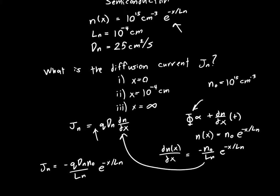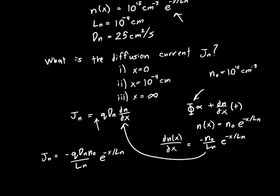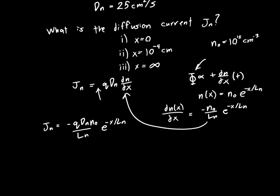And all these things are just numbers at this point, right? So Dn is a number, n-naught is a number. Only thing is we need to make sure that we get the units correct. So we know that, let's just plug everything in, then we'll work out the units.